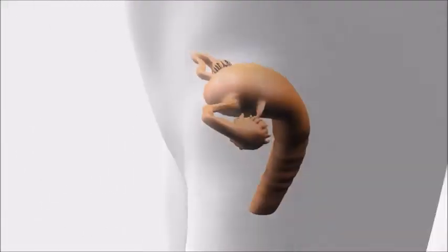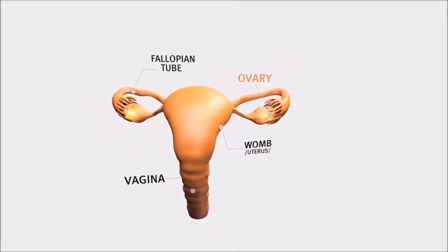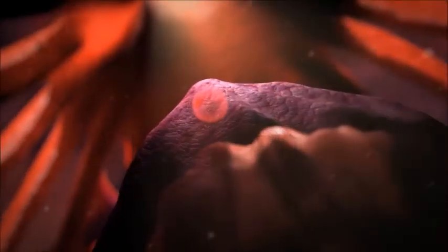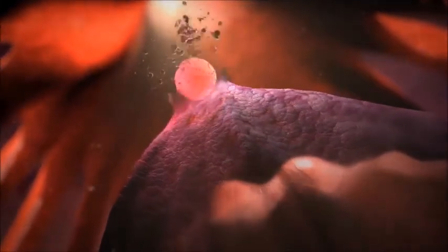They control estrogen and progesterone production in the ovaries. Ovulation occurs once in a cycle when the egg cell leaves the ovary and gets into the fallopian tube.